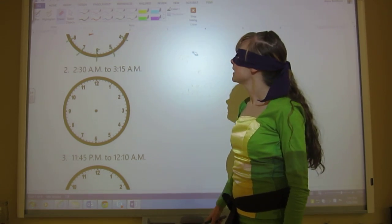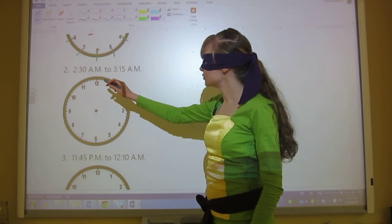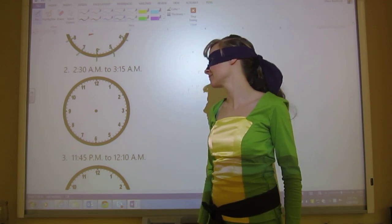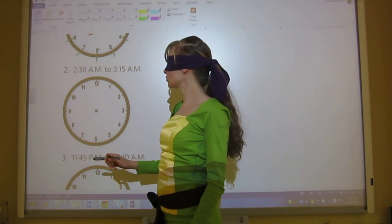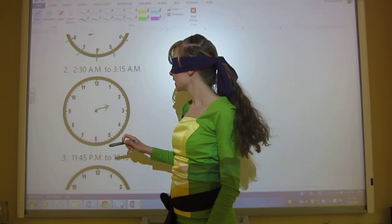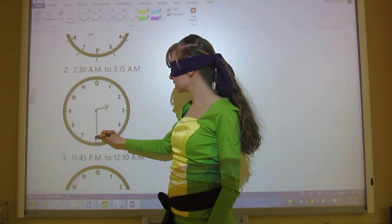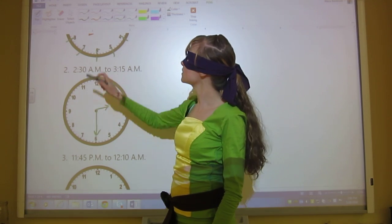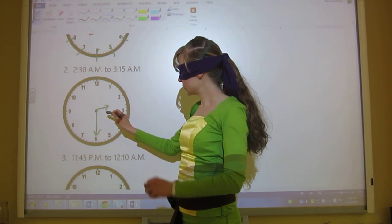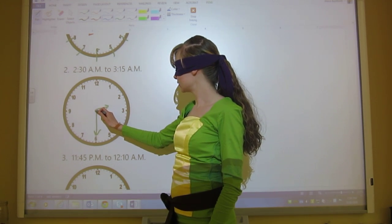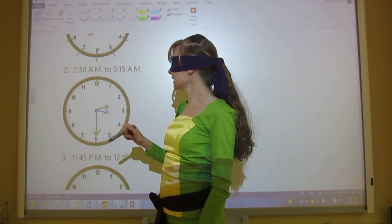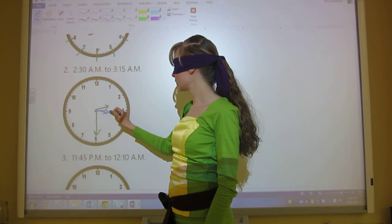So the second one has 2:30 AM to 3:15 AM, a time when we all want to be sleeping. So first we draw 2:30 on there. So my hour hand is going to go in between the two and the three and my 30 is going to go right at the six because that's when 30 is. And then we need 3:15 AM as well. So my hour hand is now going to go slightly past the three and my minute hand needs to go directly pointing at the three.